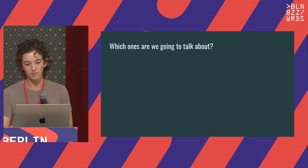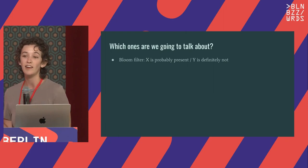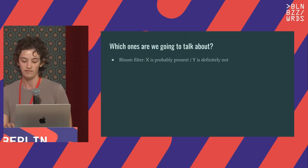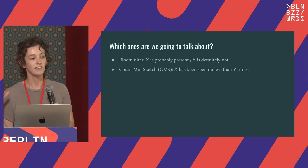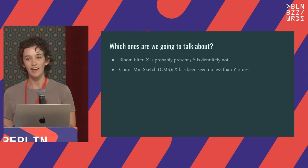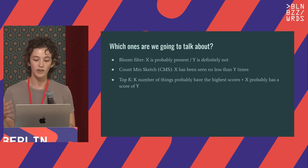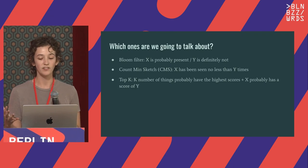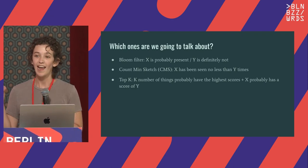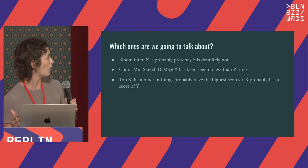Which ones are we going to talk about? The bloom filter, where X is probably present but Y is definitely not. A Count-Min Sketch, where X has been seen no less than Y times. And a Top-K, where K number of things probably have the highest scores, plus X has a score probably of Y.